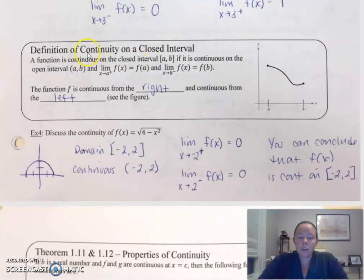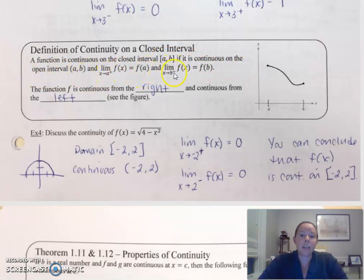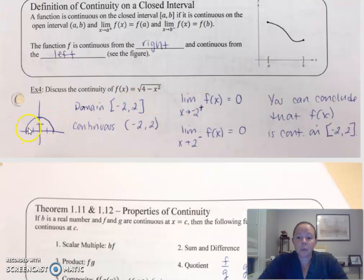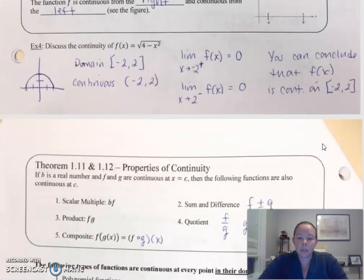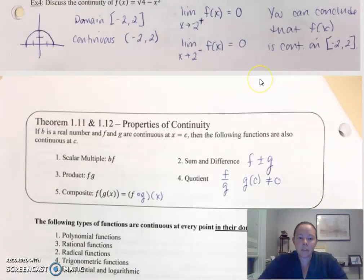Definition of continuity on a closed interval — this is where we're going to start to look at those endpoints. A function is continuous on the closed interval if it's continuous on the open interval first and foremost, the limit as x approaches a from the right equals f of a, and the limit as x approaches b from the left equals f of b. Here's an example of something where the endpoints would be included for this little semi-circle. Now don't worry too much about this — you've got bigger concepts coming that are going to show up frequently.